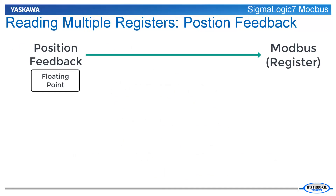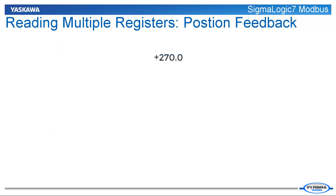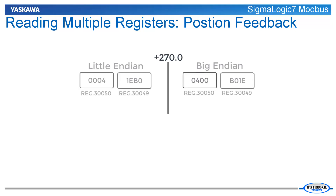Here is an example of reading the position feedback from the Sigma Logic 7 Modbus node. The node will automatically convert the floating point number to an integer of desired implied decimal places and place the data into a low and high word as 16-bit integers. For example, if the Sigma Logic 7 Modbus node is reporting a position of plus 270 degrees to the host, the node will put the data into input registers 30049 and 30050.